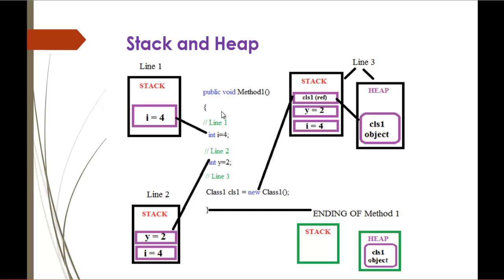And coming to heap, heap will store all the reference data types like string, classes, etc. If you're initializing a string and storing a value in it, that will be stored in the heap memory. And if you're initializing integer, float, double values, the memory will be allocated in the stack.